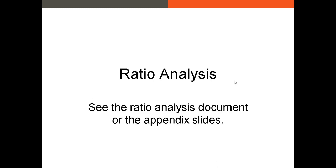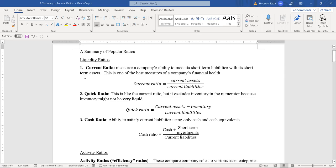Once we've put together our common size financial statements, the next thing to do is collect ratios — the ratios for our firm versus other firms, or our firm's ratios this year versus prior years. This video is meant to be more of a review. If you're in this class, you've already looked at this in at least two or three other courses in the finance curriculum. I'll just briefly go over the basic ratios, which you can also find in the appendix slides and the ratio analysis Word document on our Canvas page. I've broken the ratios down into about six categories.